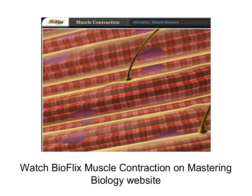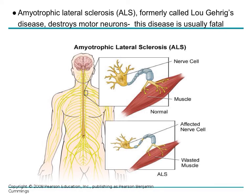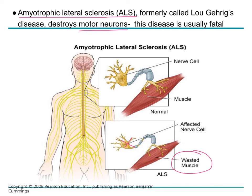This is a fantastic review of everything covered. Please go to the Mastering Biology website and watch the BioFlix on muscle contraction — it is excellent. A couple of serious muscle diseases to note: ALS, formerly known as Lou Gehrig's disease, destroys motor neurons. If your motor neuron is destroyed, your muscles atrophy. Unfortunately, there is currently no treatment or cure, and people progressively lose all muscle control, with death as the consequence.